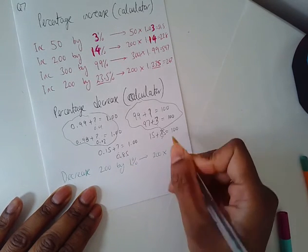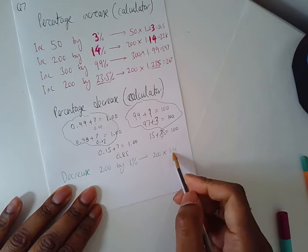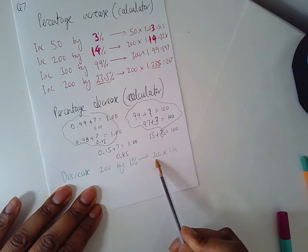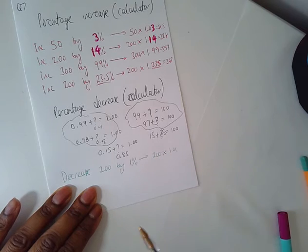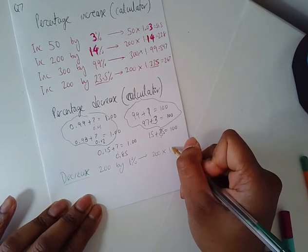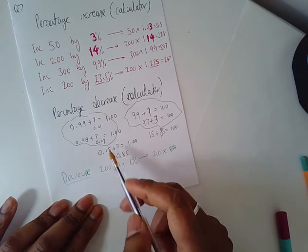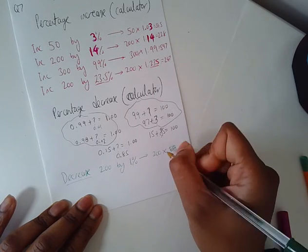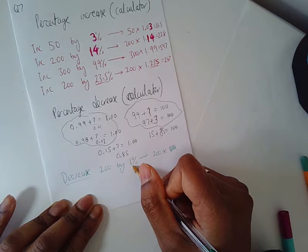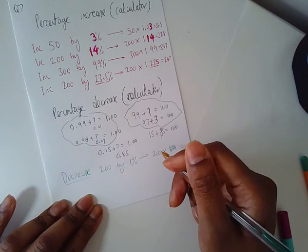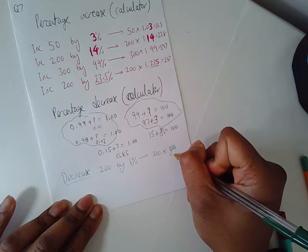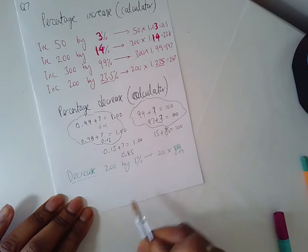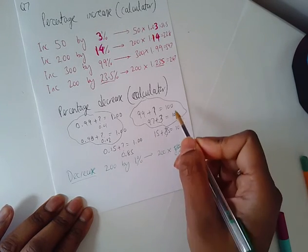Don't do 1.01. Because if you did that, it'd be like one of these questions. That would be increasing 200 by 1%. You'd be increasing it. But I want to decrease it. So don't do that. Look at the number bond for this. So you know 1%. If you knock off 1% from 100%, you get 0.99 as a decimal. You're probably thinking, how's that? 99 and 1 makes 100. The 99 and the 1 makes 100 from the number bonds.